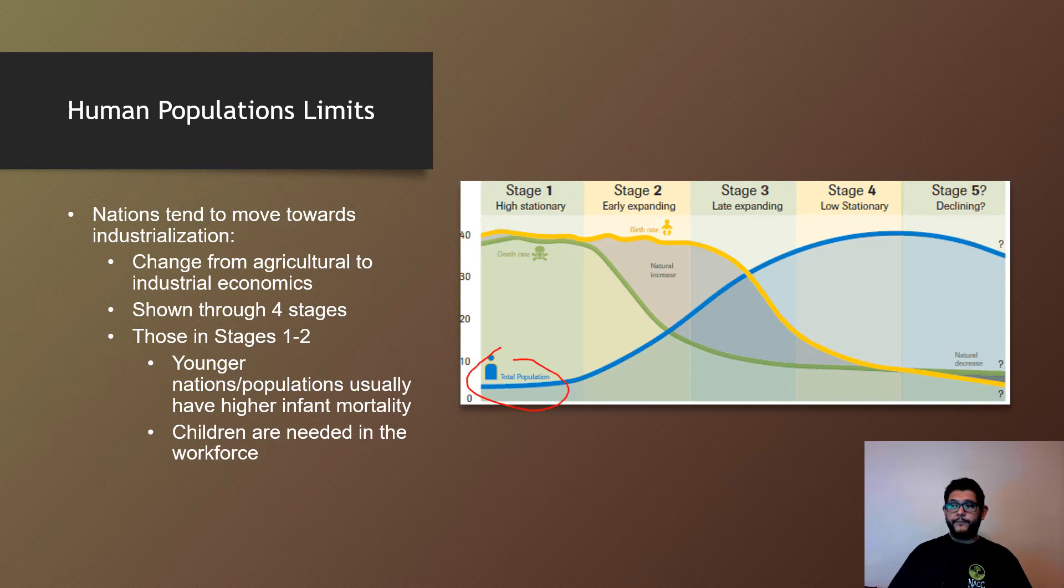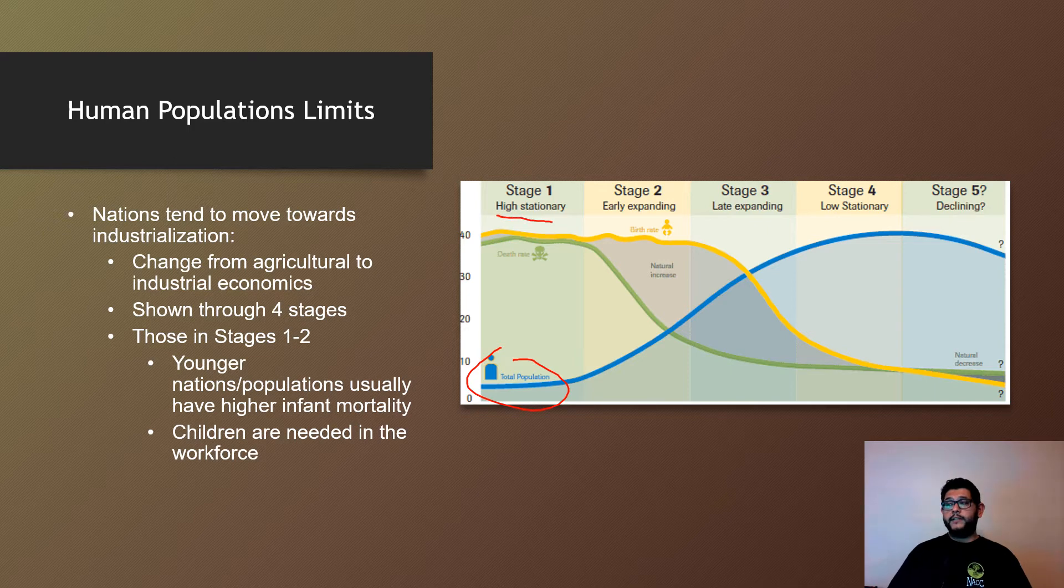Population stays low in stage one, but as you move into stage two, that population begins to increase because though the birth rate is still high, the death rate will drop. Children were needed in the workforce in stage one, but in stage two that's less common. Medical care gets better, so the death rate begins to drop while birth rate stays high.